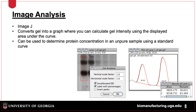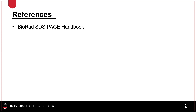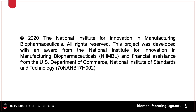After the gel is run, it can be analyzed. ImageJ is free software from the National Institute of Health for analysis of a variety of images. This software works by converting the gel image into a histogram, with more intense bands resulting in larger peaks, as shown in the right panel. A standard curve can be run on the gel and used to calculate an unknown amount of protein from a processed sample. In another video, I will review how to process images using ImageJ.